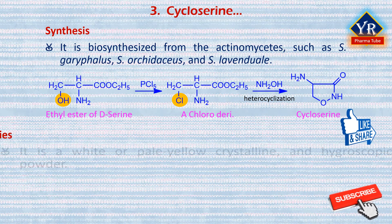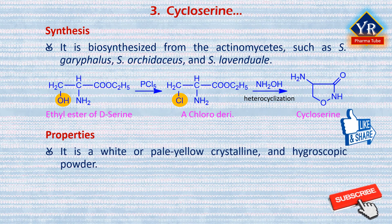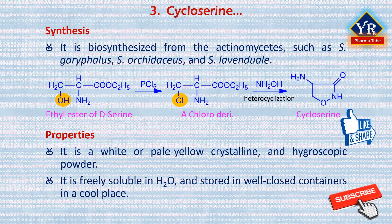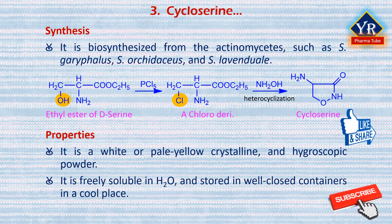Cycloserine is a white or pale yellow crystalline powder, hygroscopic and freely soluble in water. It is stored in well-closed containers in a cool place. It is stable in alkaline solution but is destroyed rapidly at neutral or acidic pH. Under mildly acidic conditions, it hydrolyzes to give hydroxylamine and D-serine. It is stable under basic conditions with the greatest stability at pH 11.5.